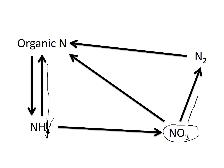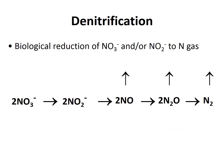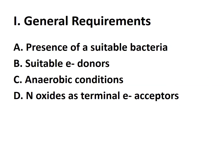After nitrification, the next step we'll discuss is denitrification, where nitrate is converted into nitrogen gas and escapes from the soil. This is a biological reduction of nitrate and nitrite to nitrogen gas. In this equation, we see how nitrogen is reduced to form nitrogen gas and escape from the soil system.